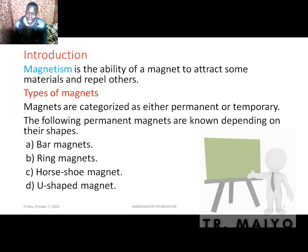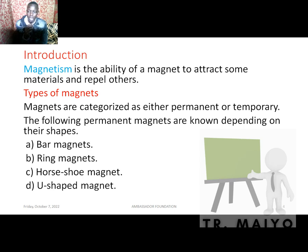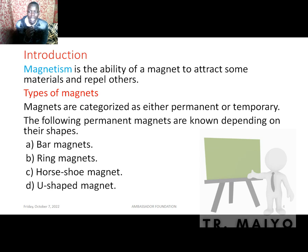A magnet is a material that attracts some materials but not others. The original magnet was a stone called lodestone, which was found in a valley. A curious scientist was walking around and realized this stone was different from others — it could pick some materials from the ground but not all. He developed interest and that led to the present-day magnets.